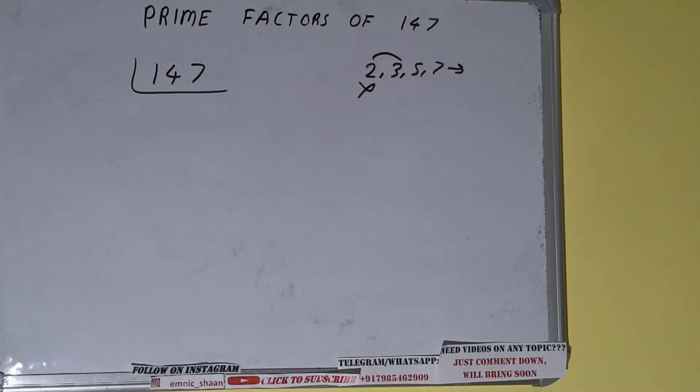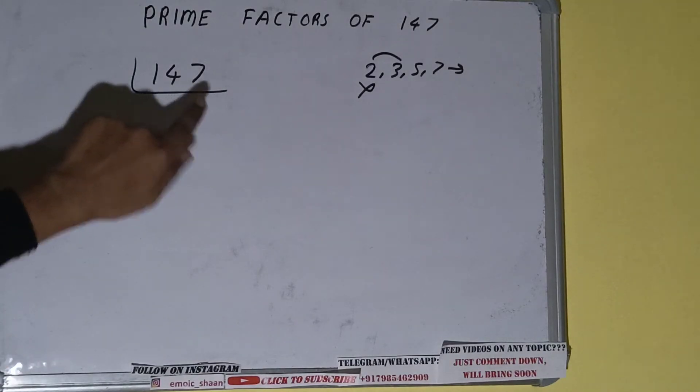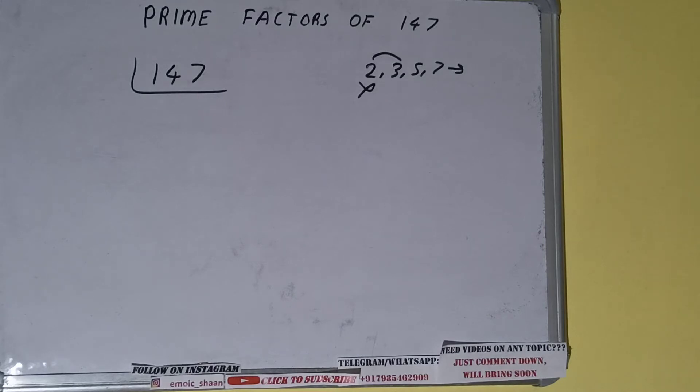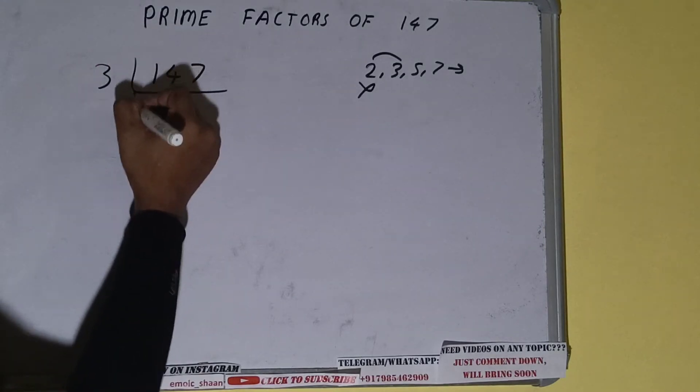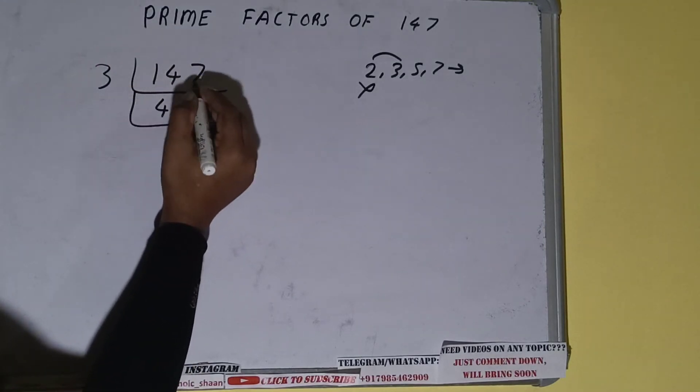the number 147 divisible by 3? If we check: 3 fours are 12, carry 2, 7—yes, it is divisible by 3. So divide it, and we'll be having: 3 fours are 12, carry 2, 7, 3 into 27. We'll be having 49.